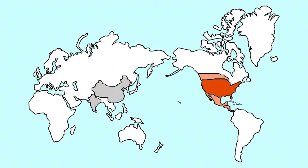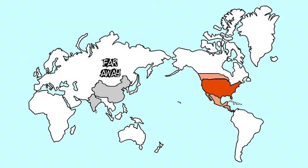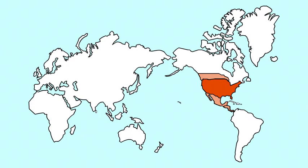How about India and China? They both have high overhead, particularly because of the big cultural gap. Also, they're pretty far away and it's expensive to get there, and they're more than 12 time zones away. So they too are less than optimal outsource locations, particularly for a software product development company in the U.S.